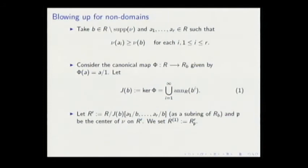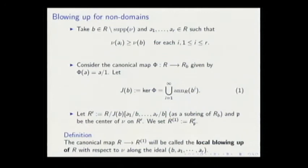But to do so, we have to module out something, because the annihilator of powers of b might not be zero. So we take that. Then what we do is consider an extension of that form: we take R modulo J_b, where J_b is the kernel of that map, and then we can add these fractions. With that, I can extend the valuation, hence we'll have a center, localize at the center, and obtain this R⁽¹⁾.